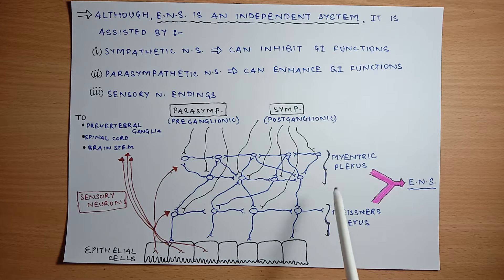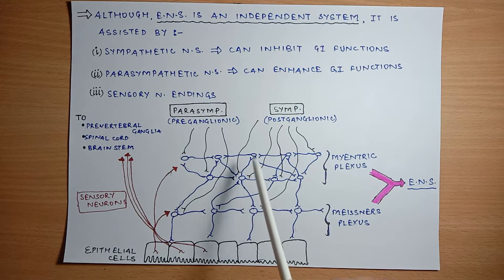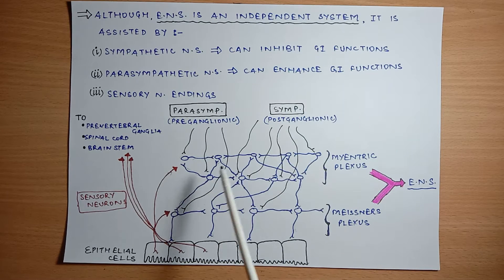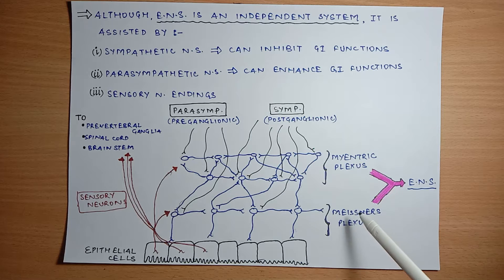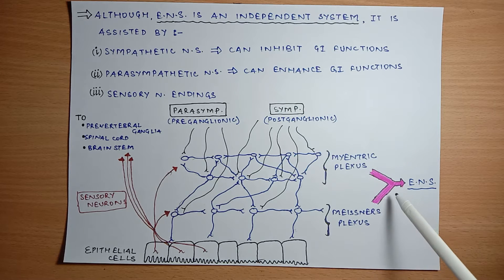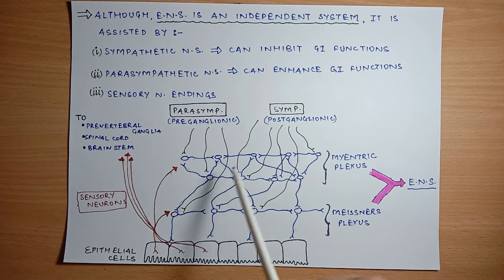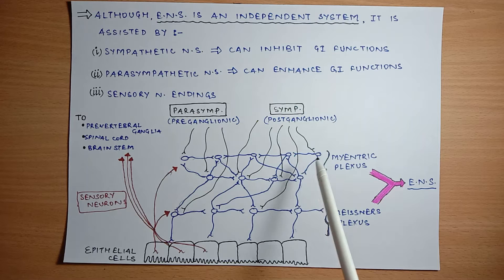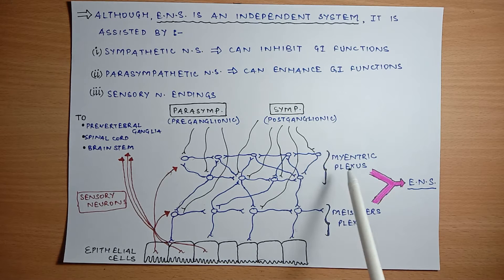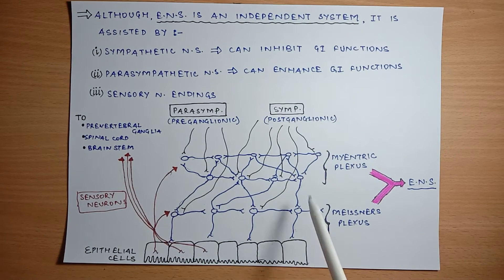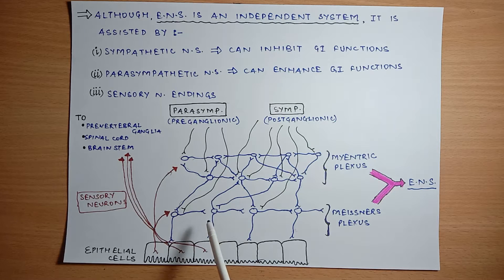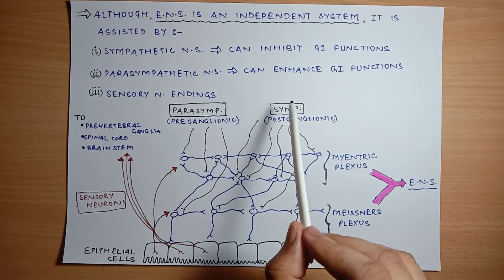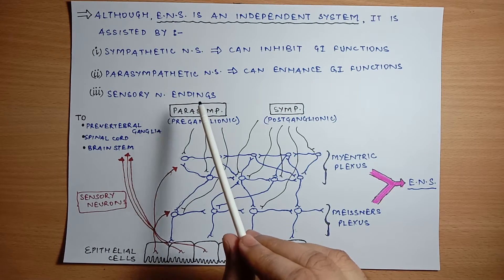In the basic diagram of the enteric nervous system: epithelial cells are present, then mucosa, then submucosa. In the submucosa, the plexus present is called Meissner's plexus. Then muscularis propria — inner circular and outer longitudinal muscles — contains the myenteric plexus. Together, Meissner's plexus and myenteric plexus are called the enteric nervous system. A plexus is a complex network of nerves where every neuron is connected. These plexuses are the intra-nervous system and form an independent system, regulated by the sympathetic nervous system, parasympathetic nervous system, and sensory neurons.